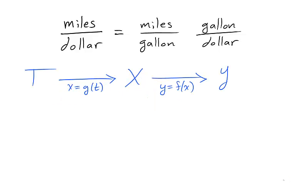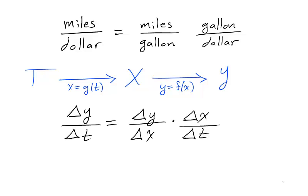Let's move away from that example to abstract variables. Suppose that y depends on x through the function f, and x depends on t through the function g. In terms of average rates of change, we're looking at the change of y with respect to t.